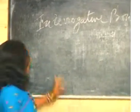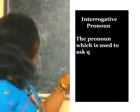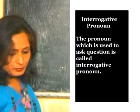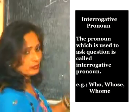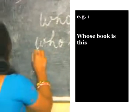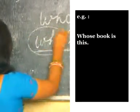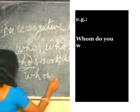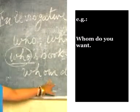Interrogative pronoun is the pronoun which is used to ask a question. For example: who, whose, whom. 'Whose book is this?' — here 'whose' is the interrogative pronoun. 'Whom do you want?' — in this sentence 'whom' is the interrogative pronoun.